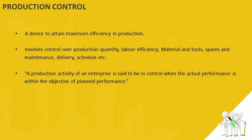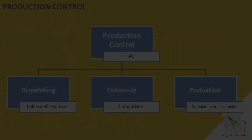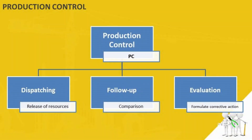Production control is a device to attain the highest efficiency in production, which is done by producing the required quantity of the required quality at the required time by the best and cheapest method available. This involves control on production quantity, material, tools, spare and maintenance, as well as controlling labor efficiency, delivery schedule, and many more. A production activity is said to be in control when the actual performance is within the objective of planned performance.